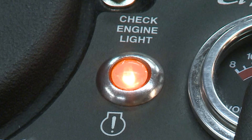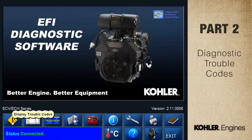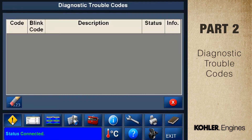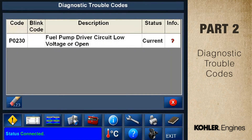Both types of codes are stored in the engine's computer memory. Select the trouble code button to display any stored codes. We're looking at code P0230 — that's the fuel pump circuit. The code status is current. Click the red question mark in the info column to define this code.